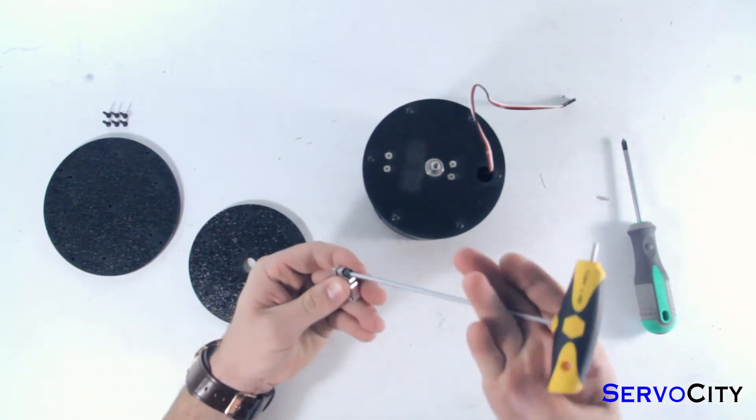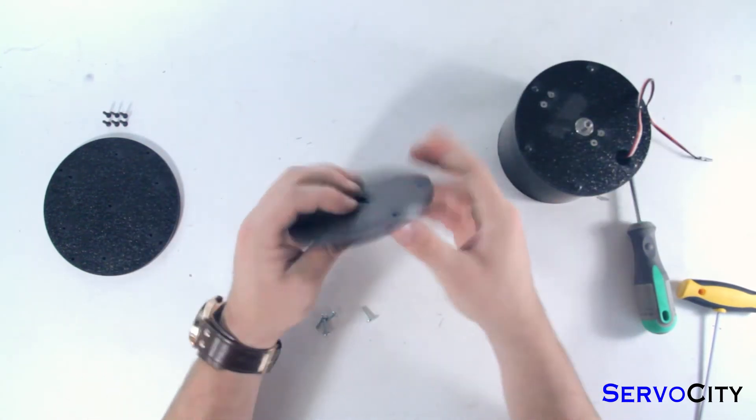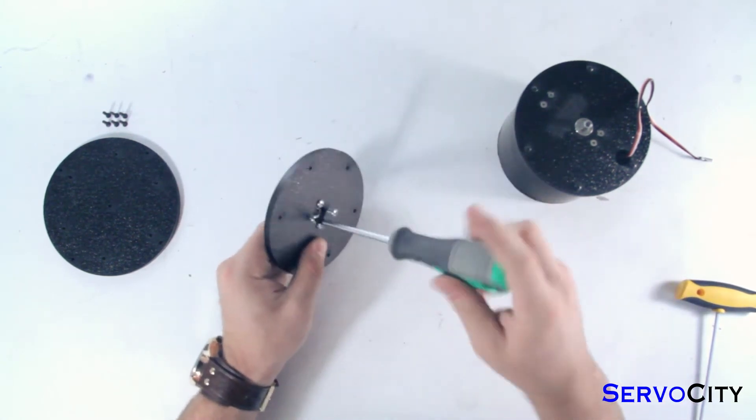Then you'll attach the clamping hub to the back side of the ABS plate using the four Phillips head screws.